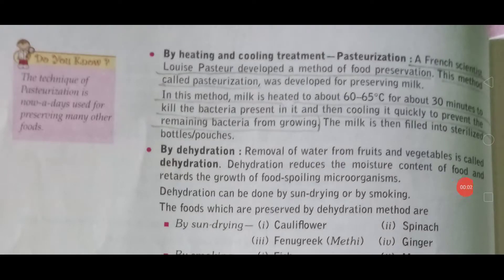Dear students, I am teaching you chapter number 2, that is microorganisms and viruses - friends and foe. In this sequence, I have taught you yesterday about food poisoning, symptoms of food poisoning, what type of bacteria and fungi cause food poisoning, and about food preservation - the methods of food preservation. I have taught you about preservation by cooling, and today I am going to teach you about heating and cooling treatment and how we can preserve food material.